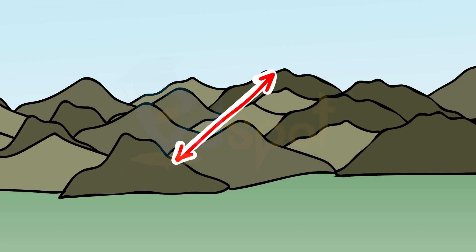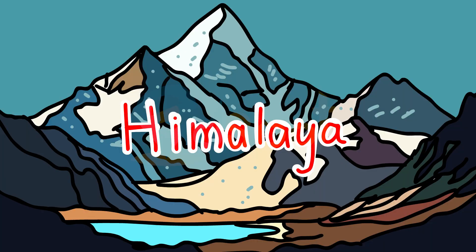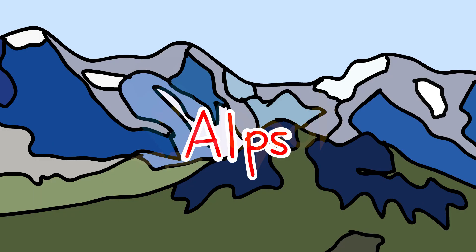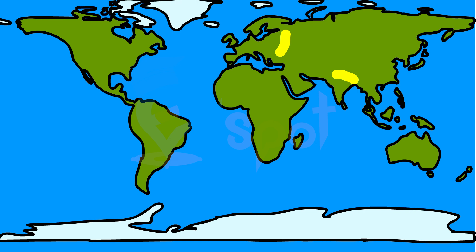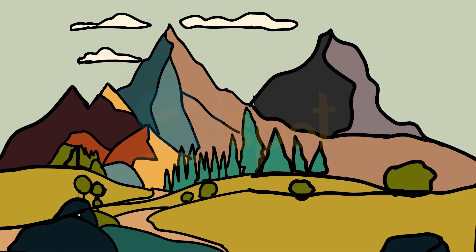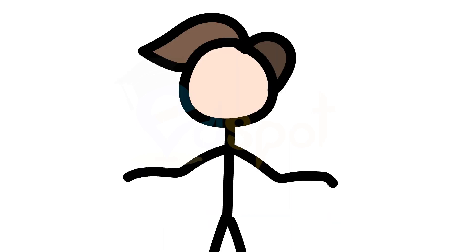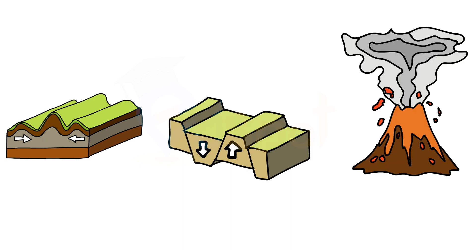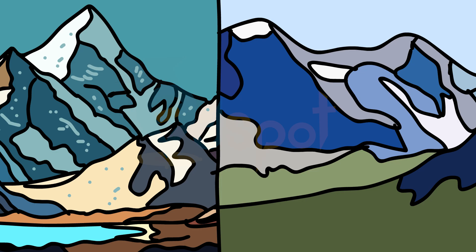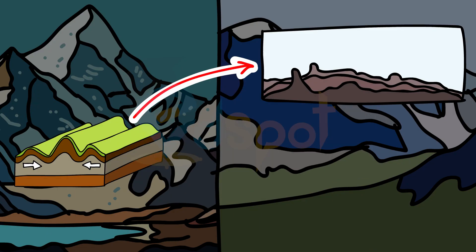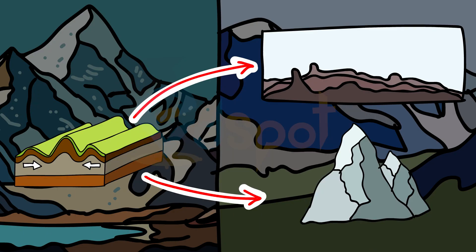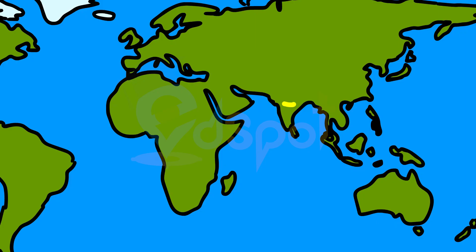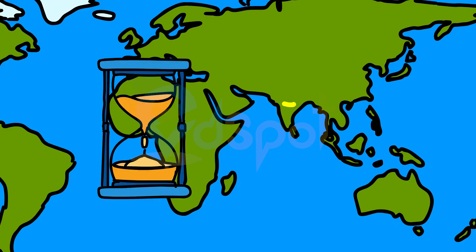Mountains may be arranged in a line known as a range. Many mountain systems consist of a series of parallel ranges extending over hundreds of kilometers. The Himalayas, the Alps, and the Andes are mountain ranges of Asia, Europe, and South America respectively. Mountains vary in their heights and shape. There are three types of mountains: fold mountains, block mountains, and volcanic mountains. The Himalayan mountains and the Alps are young fold mountains with rugged relief and high conical peaks. The Aravalli range in India is one of the oldest fold mountain systems in the world.